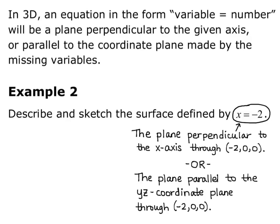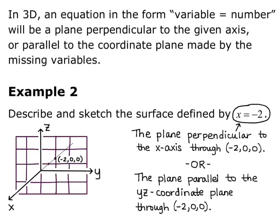Now the difficult part is sketching it. I draw my x, y, and z axes, making sure to label them. I need the negative x-axis going back into the page, and I'm going to mark the point negative 2, 0, 0. I know that my plane goes through that point and is parallel to the y-z plane, so I draw the plane as if it's back behind the x, y, and z axes going through the point negative 2, 0, 0 parallel to the y-z axis.